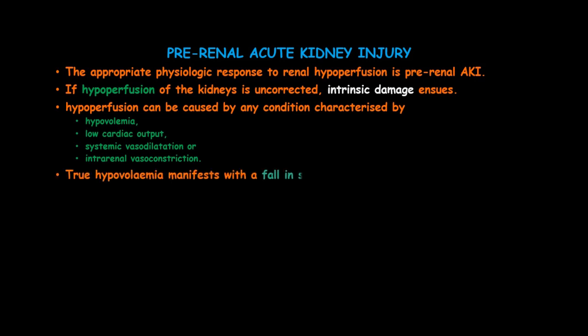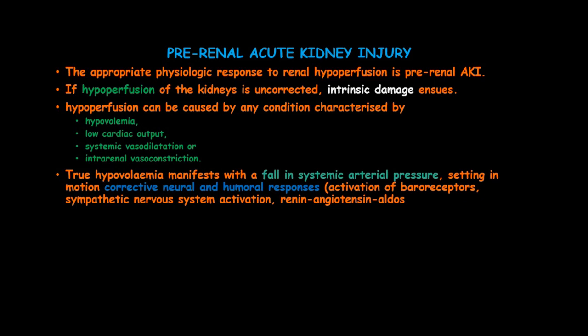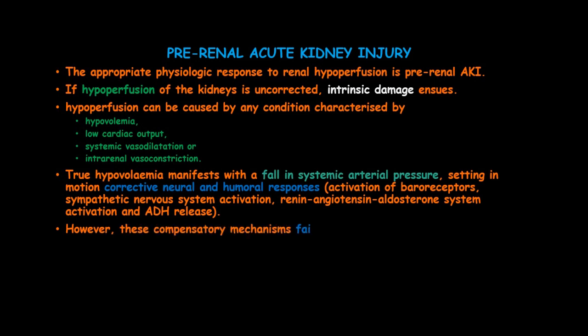True hypovolemia manifests with low systemic arterial blood pressure, setting in motion corrective neural and humoral responses such as activation of baroreceptors, sympathetic nervous system activation, and the renin-angiotensin-aldosterone system together with ADH release. However, these compensatory mechanisms fail if the mean arterial blood pressure is less than 70 to 80 mmHg.